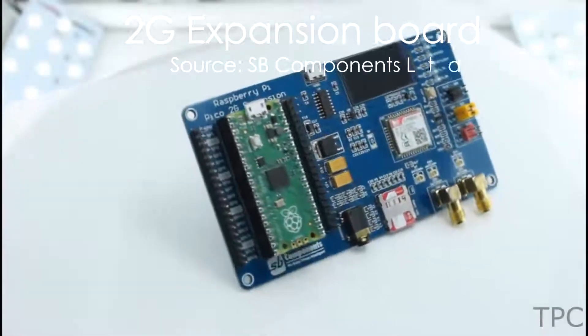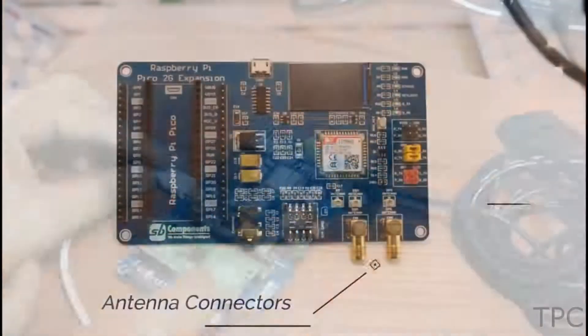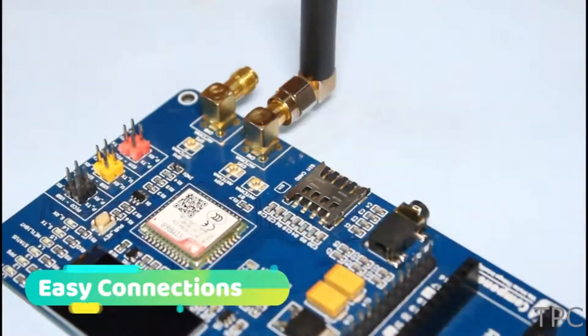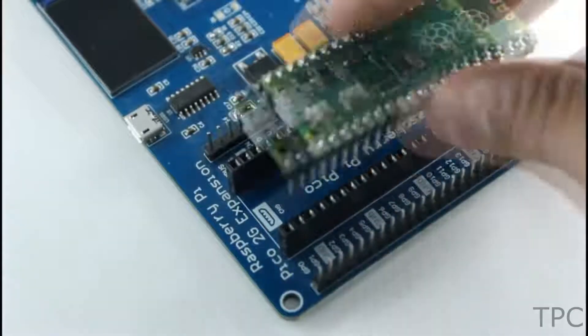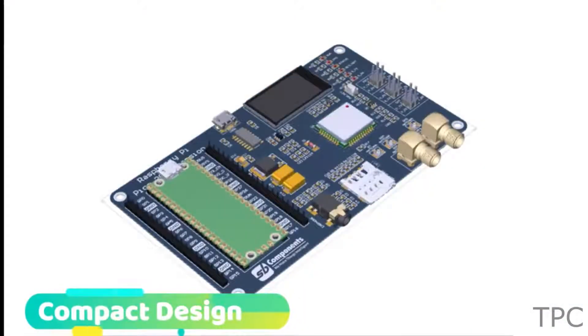This is a Raspberry Pi 2G expansion board. You just need a SIM card to make this module work as a phone with calling and call receiving features. To work with it you just have to attach components like an antenna, a SIM card, and Raspberry Pi Pico, and you are good to go. Here is the PCB design of the board.